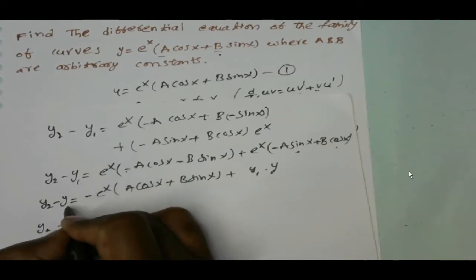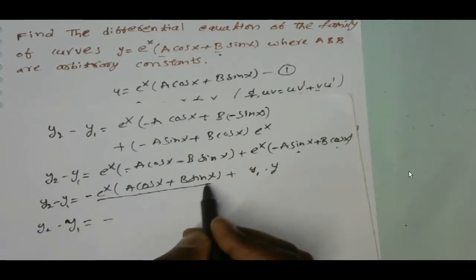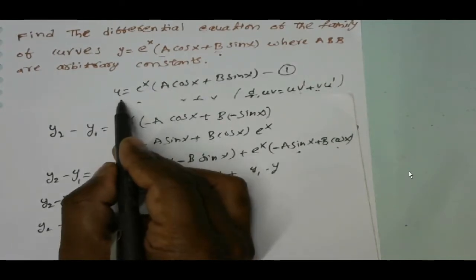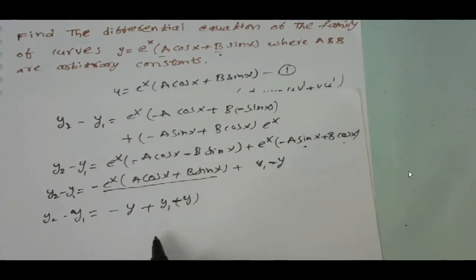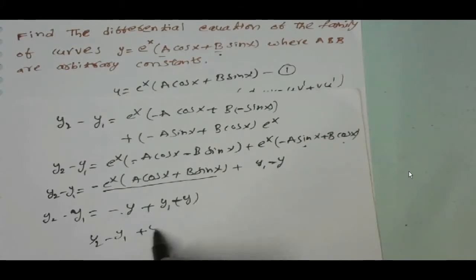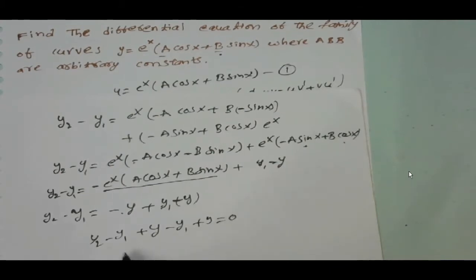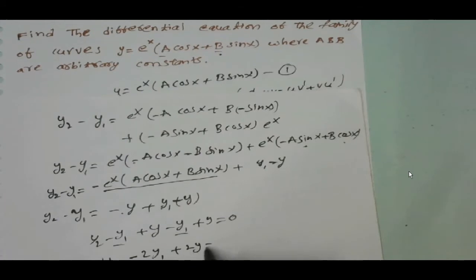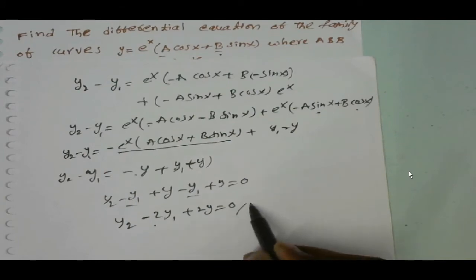So y₂ minus y₁ equals minus y, in place of e power x of a cos x plus b sin x we write y, plus y₁ minus y. Taking all terms to the left side: y₂ minus y₁ plus y minus y₁ plus y equals 0, which gives y₂ minus 2y₁ plus 2y equal to 0. Thank you for watching my video.